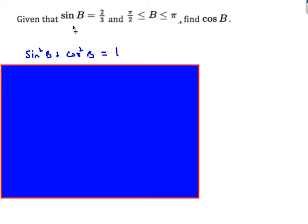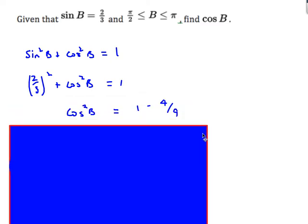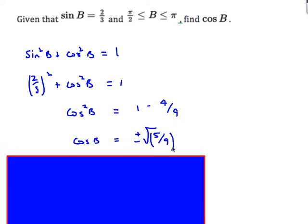Another question. We're given that sin b is 2/3, and we want to find cos b, with b between π/2 and π. We use the identity sin²b + cos²b = 1. Sticking in sin b = 2/3, we get (2/3)² + cos²b = 1. Rearranging, cos²b = 1 − 4/9 = 5/9. Therefore cos b = ±√5/3.